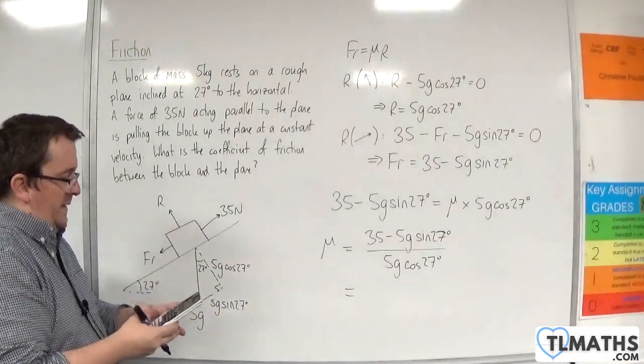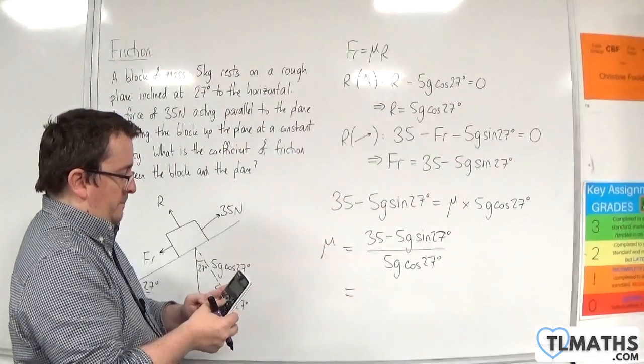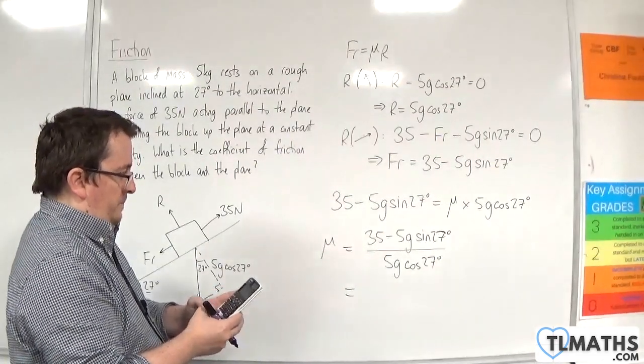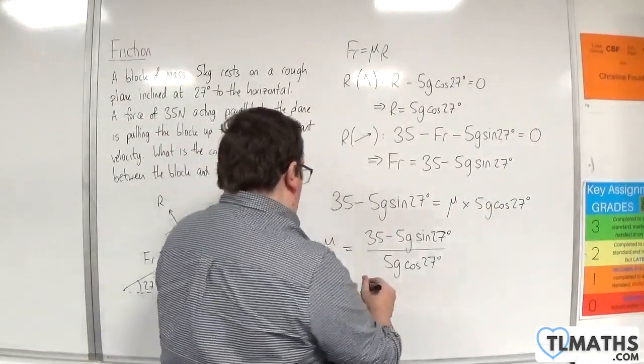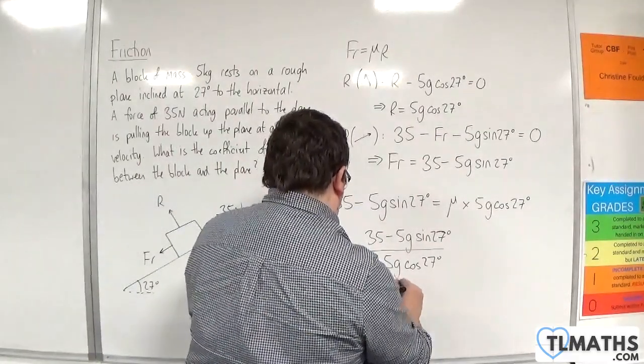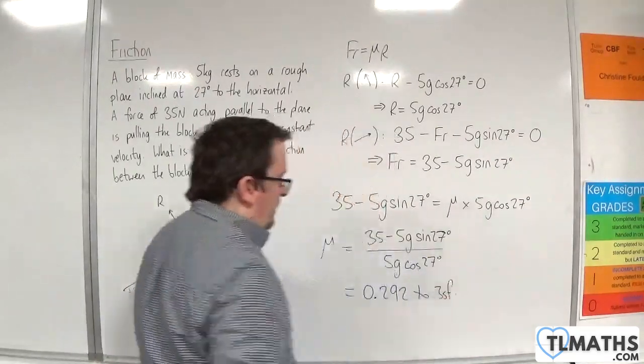Let's plug that in the calculator using g as 9.8. And we get 0.292 to 3 significant figures.